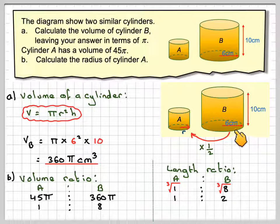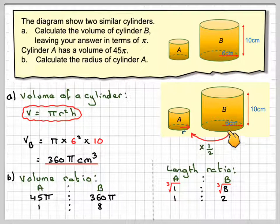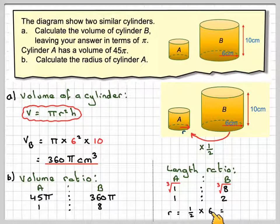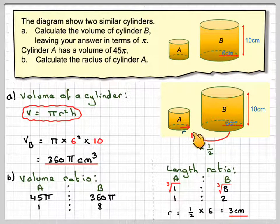Which means that this radius here is half the radius here. So therefore, the radius on this one, r, will be a half times 6, which is equal to 3 centimeters. And the height of this one, we won't ask for it, would be 5, half of 10.